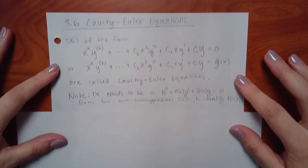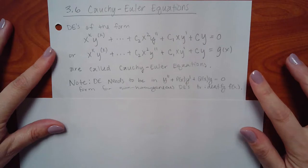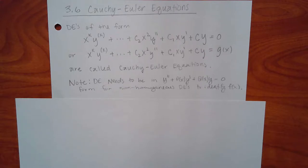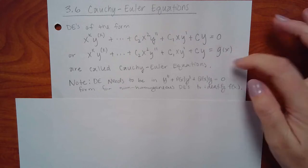This is section 3.6, covering Cauchy-Euler equations. We've already covered sections 3.3 and 3.5, where the kinds of equations we learned had constant coefficients. We learned how to do it whether it was homogeneous (equal to zero) or non-homogeneous (equal to some function).